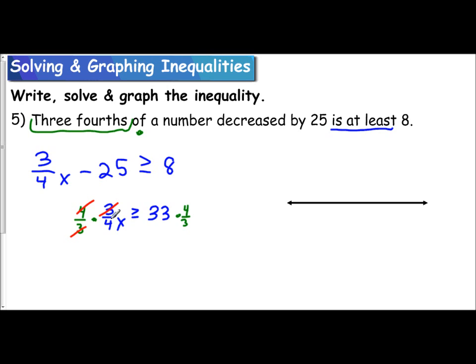So multiply the left side and the right side by four thirds. That allows me to cancel out the 3 in the top and the 4 in the bottom. And so when I multiply 33 times four thirds, you can do 33 times 4 and then divide by 3, which gives me 44.